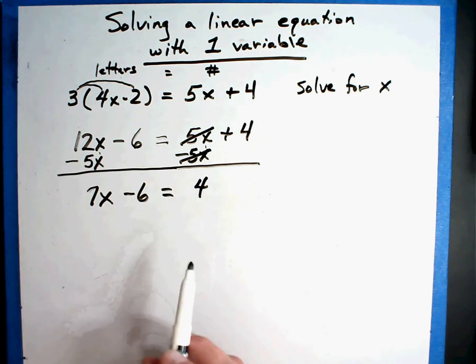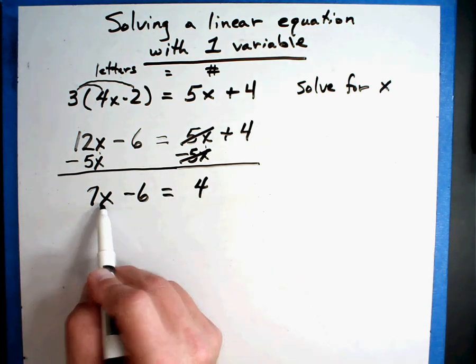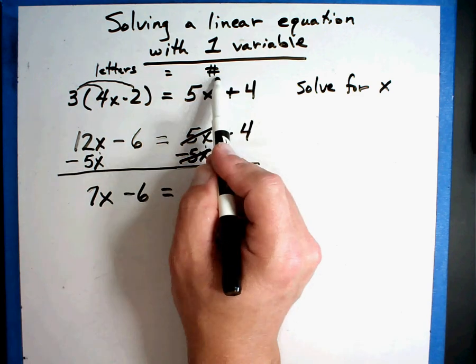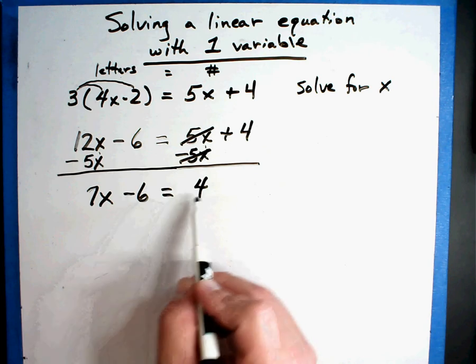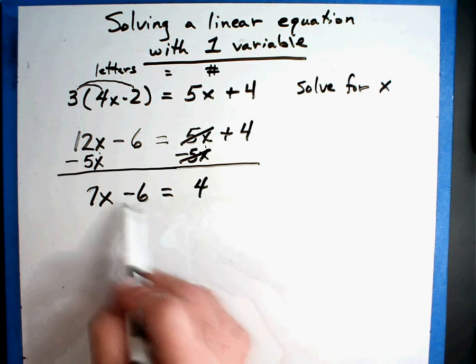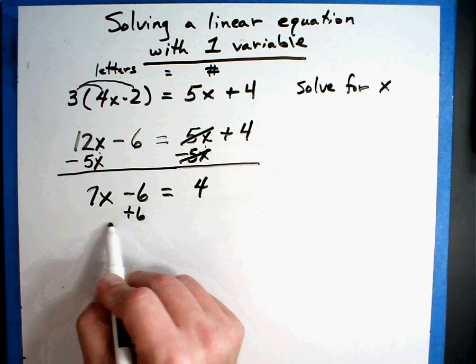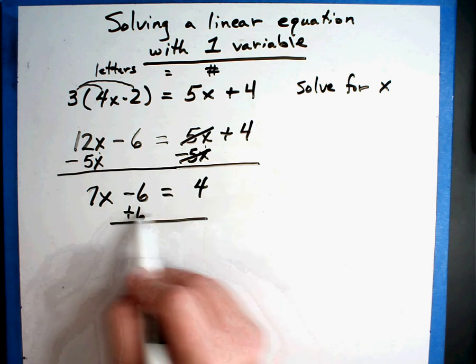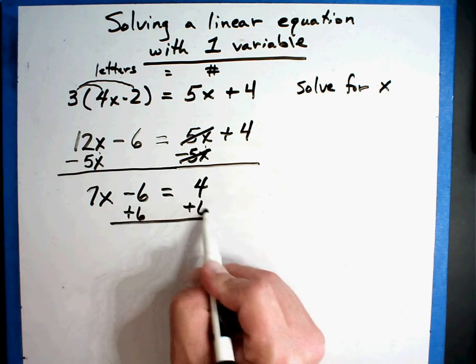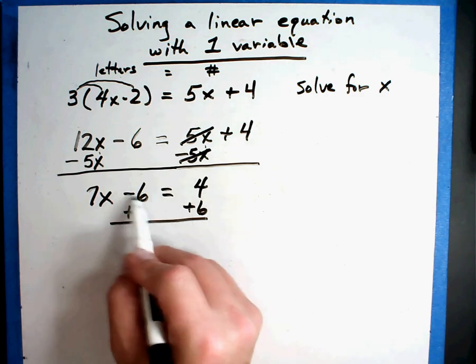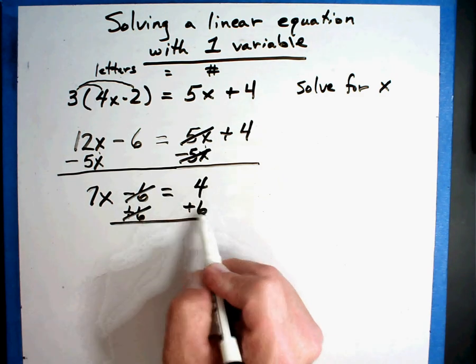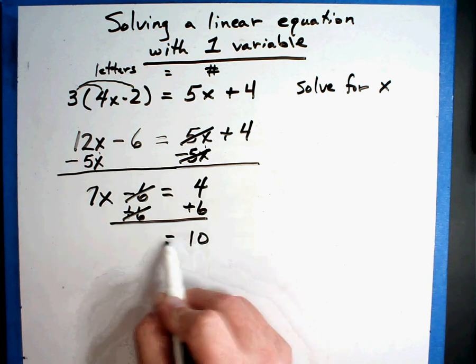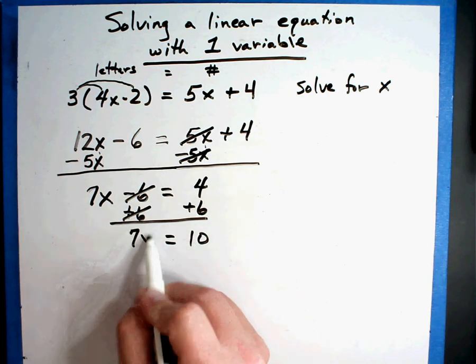Well almost, letters on the left, numbers on the right. Well that number right here needs to move over here. Well it's minus 6 right now so I have to do the opposite to move it. Whatever I do on this side I do on this side, add 6. So minus 6 plus 6, well that's a zero. 4 plus 6, that's 10 equals 7X.